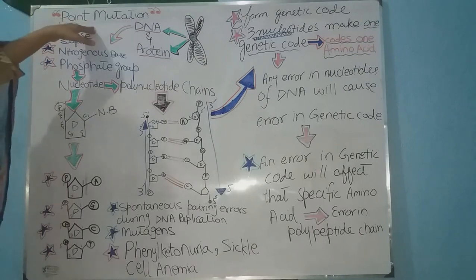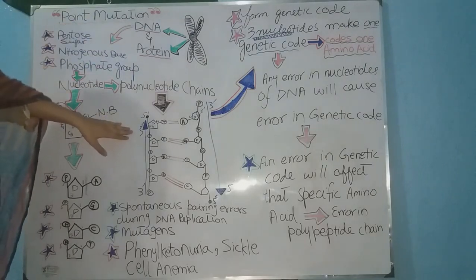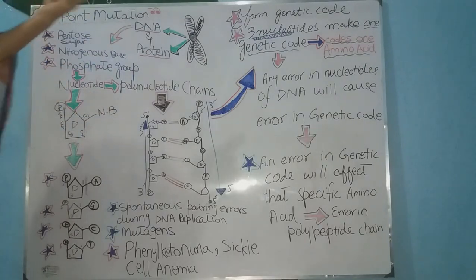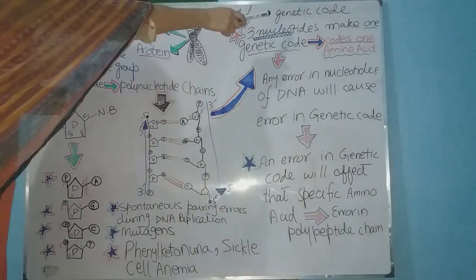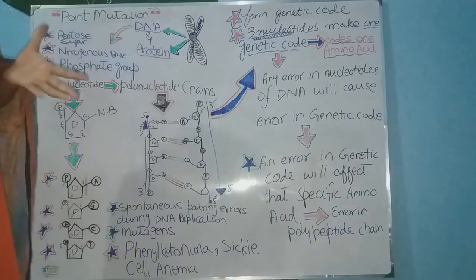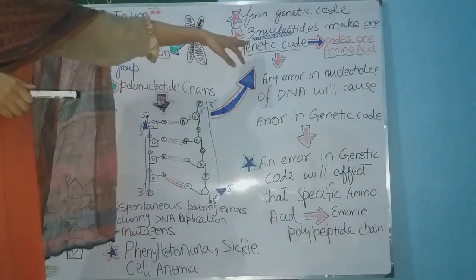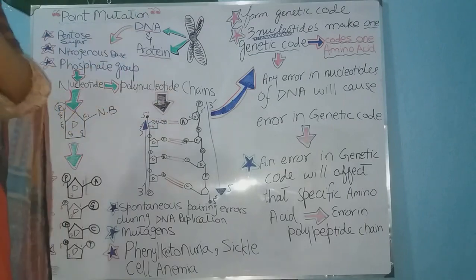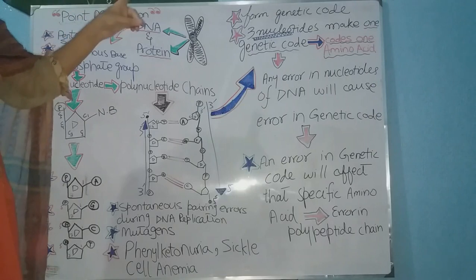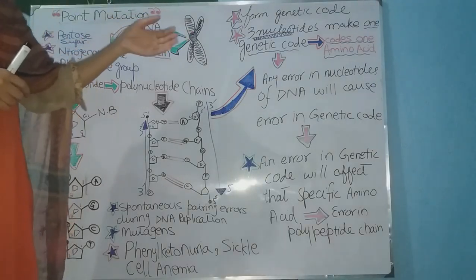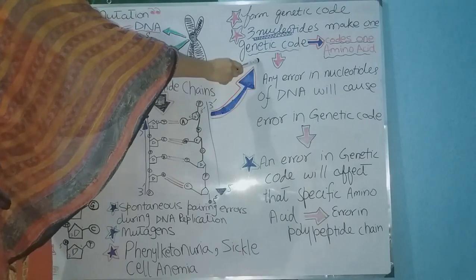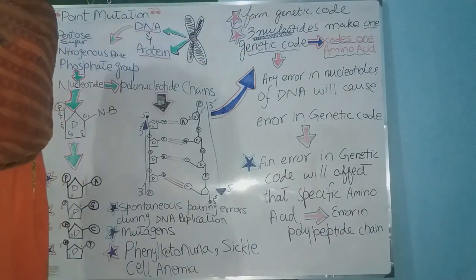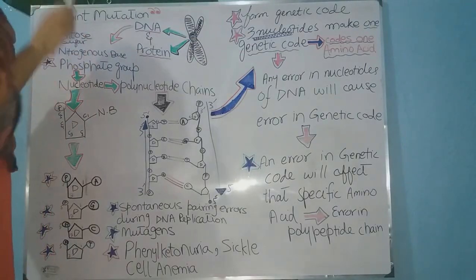In the case of point mutation, these polynucleotides form the genetic code. As you can see on my board, these nucleotides are involved in the formation of genetic code. The genetic code is a combination of three nucleotides — three nucleotides form one genetic code, and that one genetic code codes for one specific amino acid.